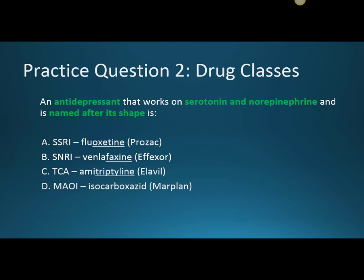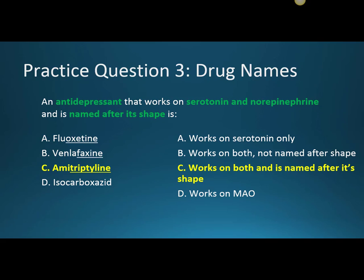The next question: an antidepressant that works on serotonin and norepinephrine and is named after its shape is? We have the same four options. The correct answer is C, amitriptyline. That one works on both serotonin and norepinephrine and is named after its shape, which has the three cyclic rings.